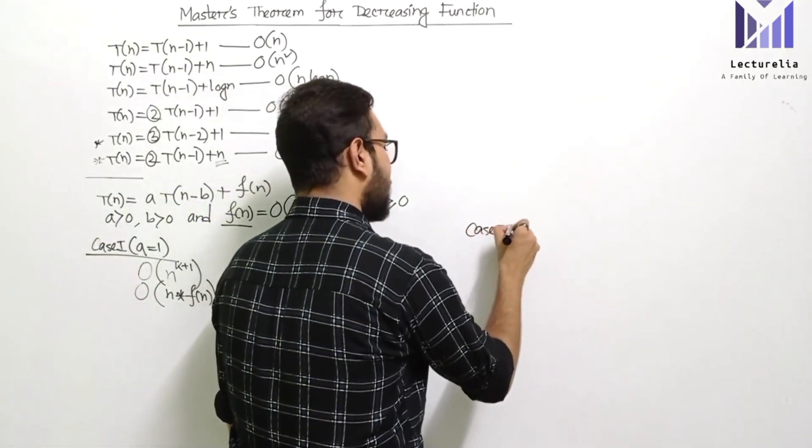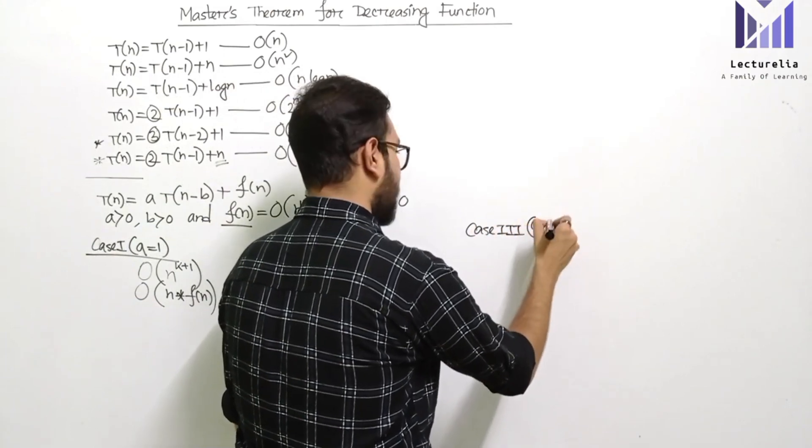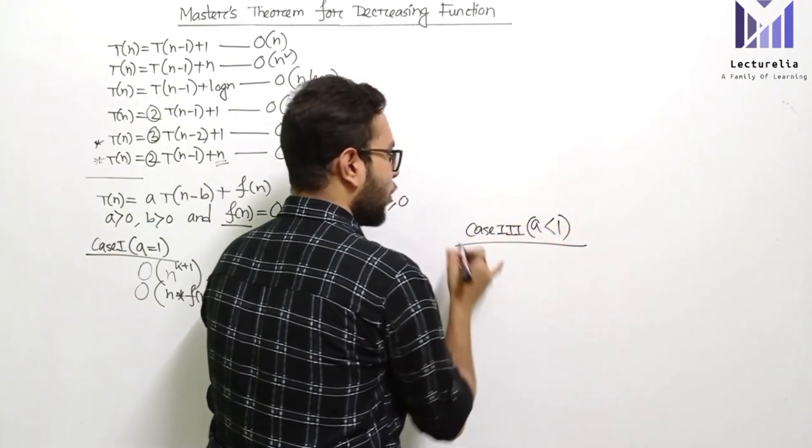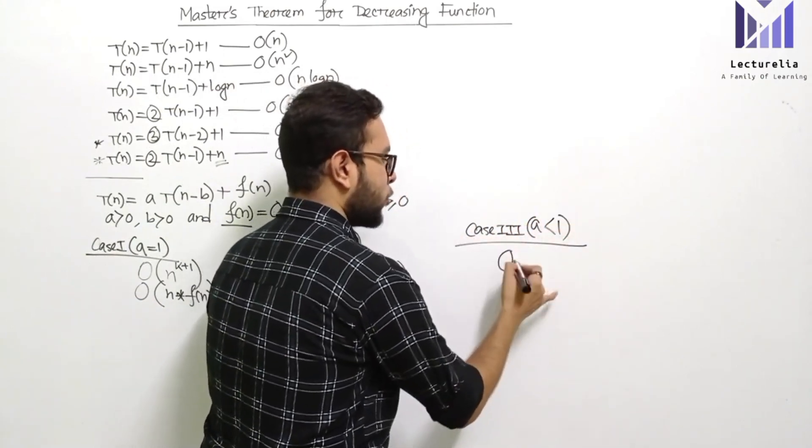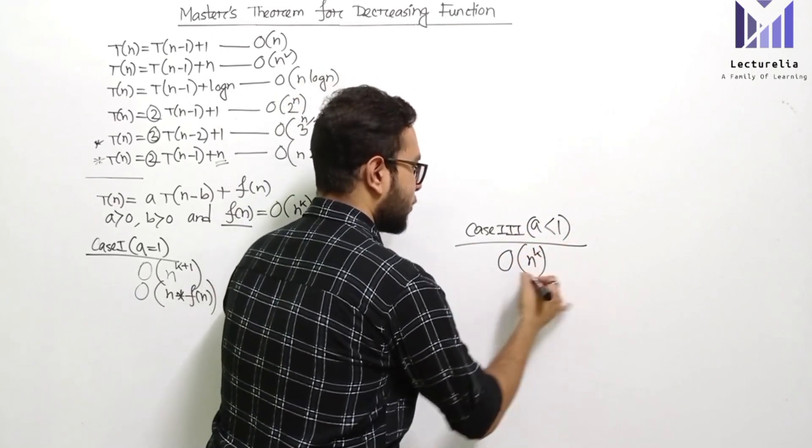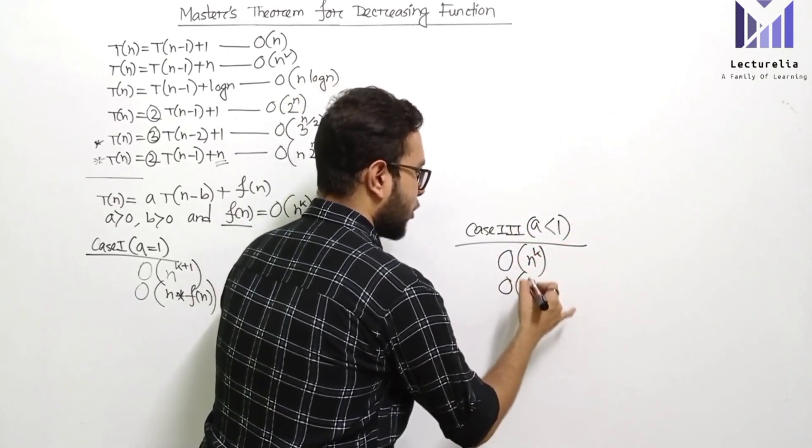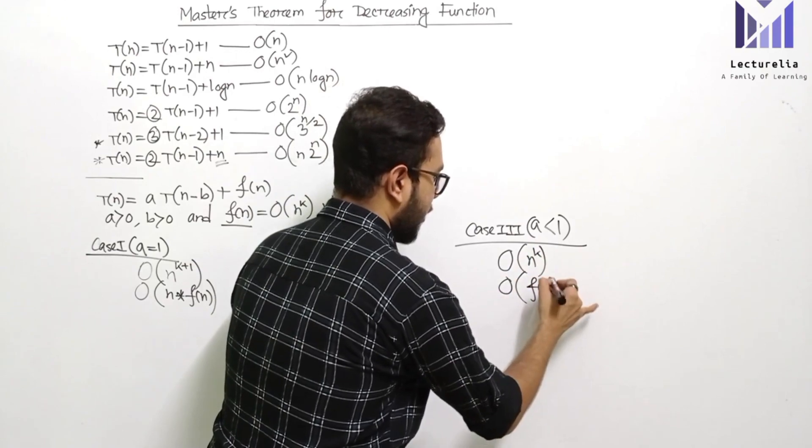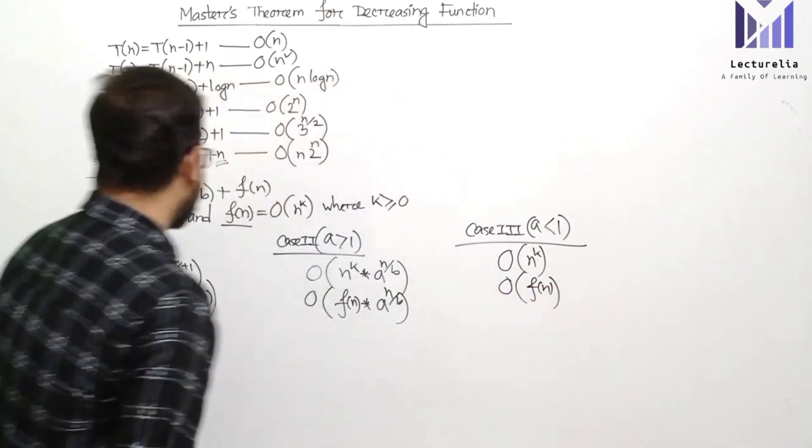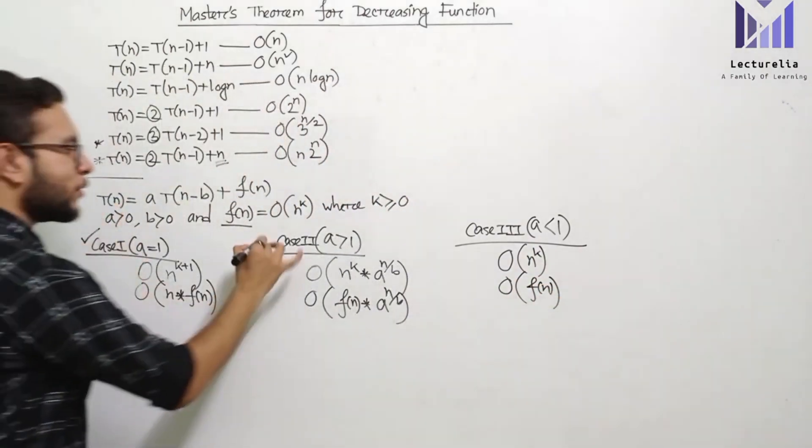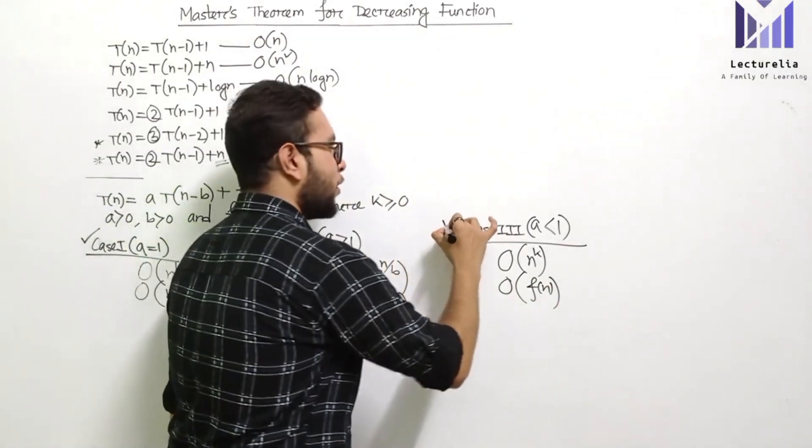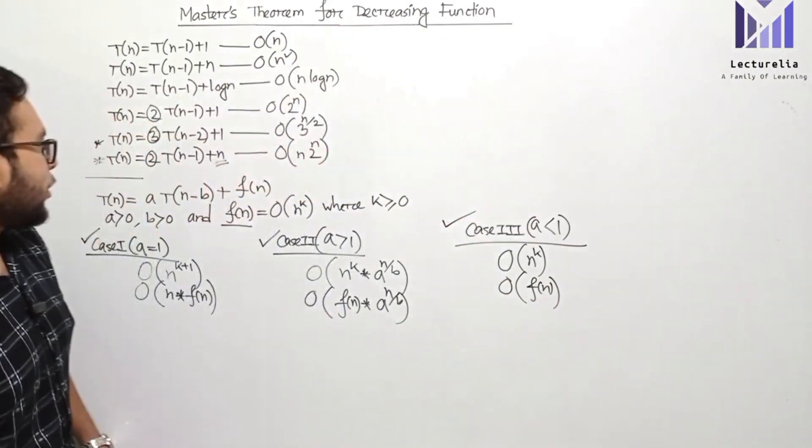In other words, order of f(n) into a to the power n by b. Case 3: if k is less than zero, then we simply have order of n to the power k, or in other words, order of f(n).